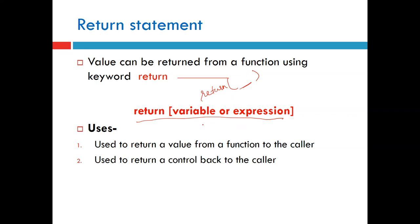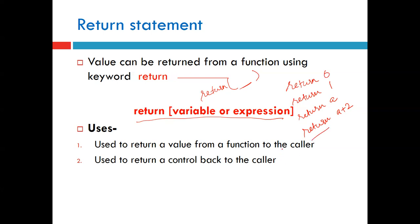The square bracket in the syntax means whatever we provide is completely optional. You can give a variable, a direct value, or an expression. For example, you can write 'return 0', 'return 1', 'return a' where a is a variable, or 'return a + 2' where the expression value will be calculated and returned.